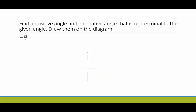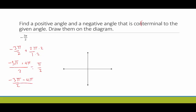Now examples with radians. To find coterminal angles, we add or subtract two pi. For negative 3 pi over 2 plus 2 pi: we need a common denominator, so we multiply 2 pi by 2 over 2 to get 4 pi over 2. That gives us negative 3 pi plus 4 pi all over 2, which equals pi over 2. To find a negative coterminal angle, we take negative 3 pi over 2 minus 2 pi — that's negative 3 pi over 2 minus 4 pi over 2, giving us negative 7 pi over 2.